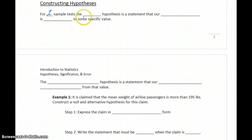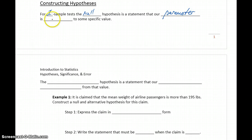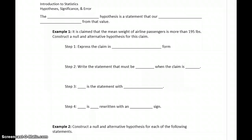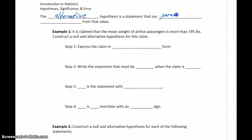For one sample tests, the null hypothesis is always a statement that our population parameter is exactly equal to some specific value — so our proportion is 50%, the mean is 100%, the median is 1000%, whatever that happens to be. The alternative hypothesis is always a statement that our parameter somehow differs from the value stated in the null hypothesis.